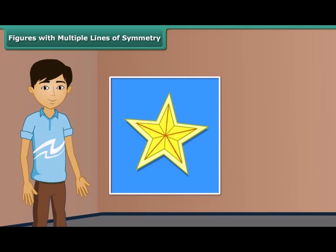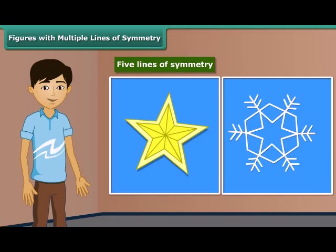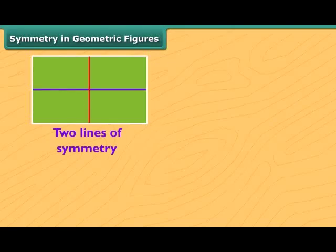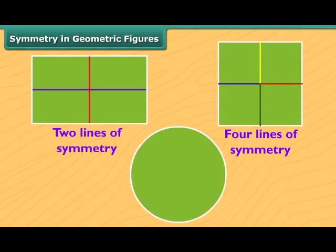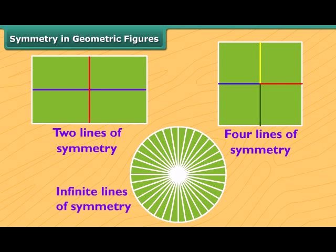Children, look at this beautiful star. You can see the star has five lines of symmetry. What about this pattern? How many lines of symmetry does it have? It has six lines of symmetry. Rectangles have two lines of symmetry, but a square has four. A circle has infinite lines of symmetry.